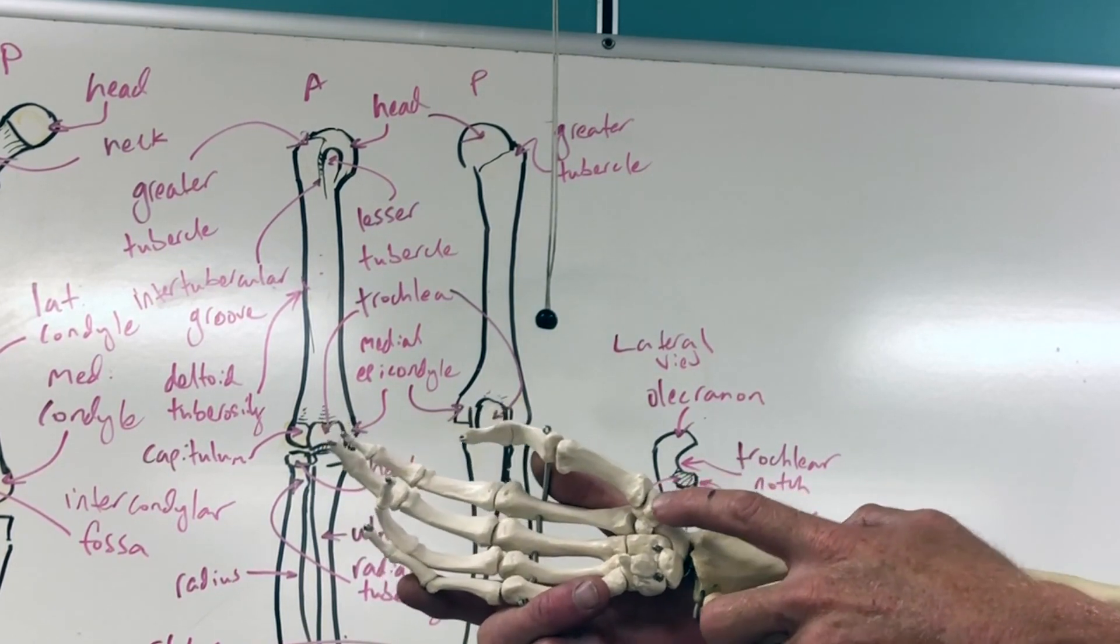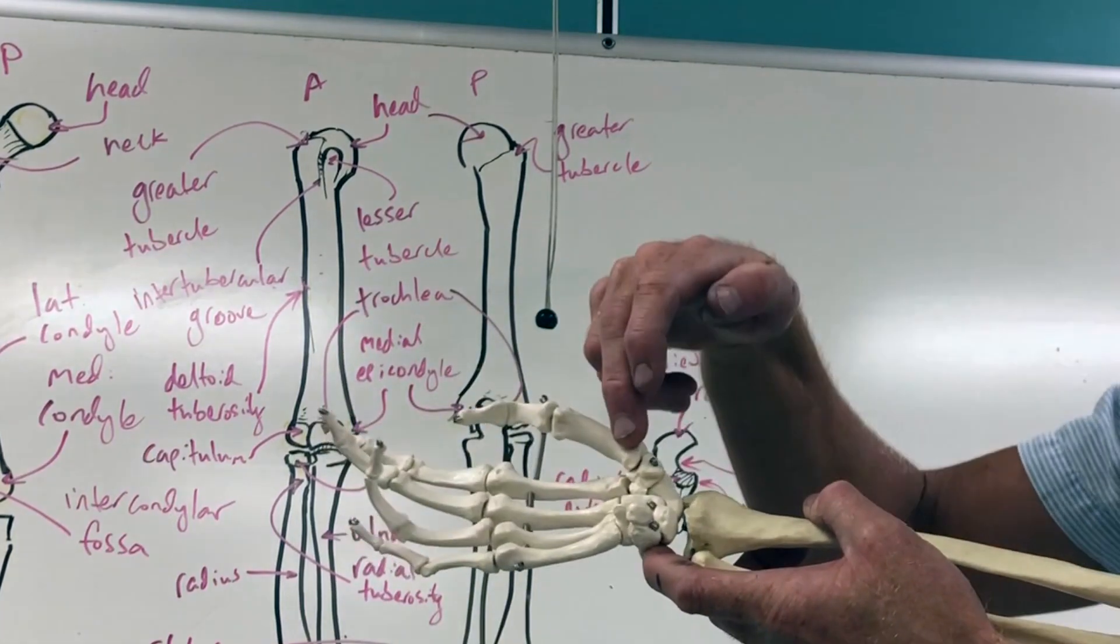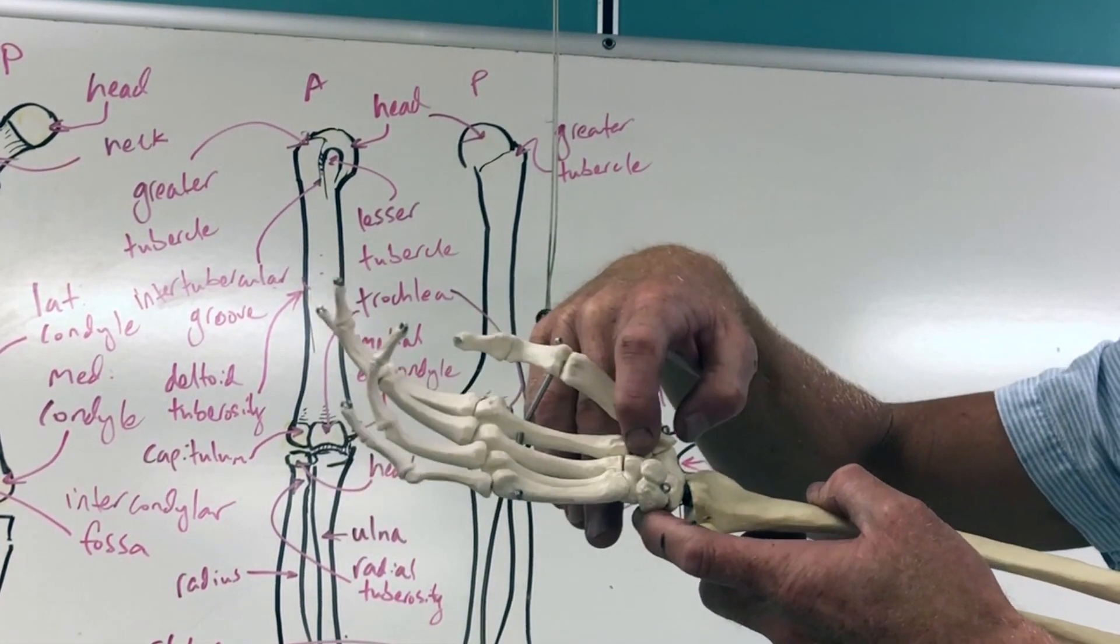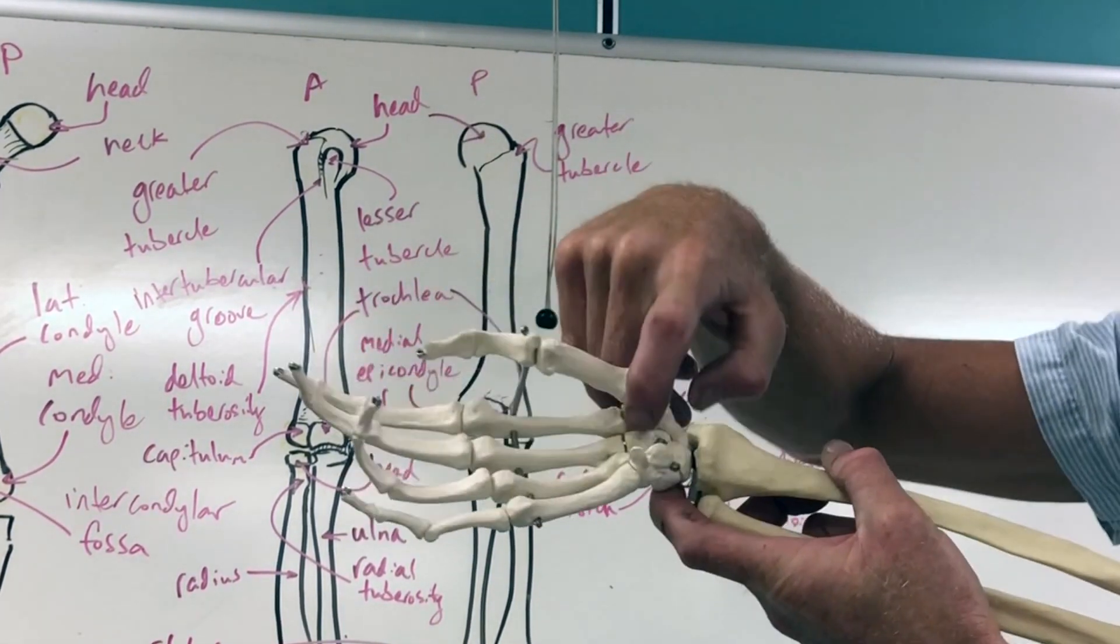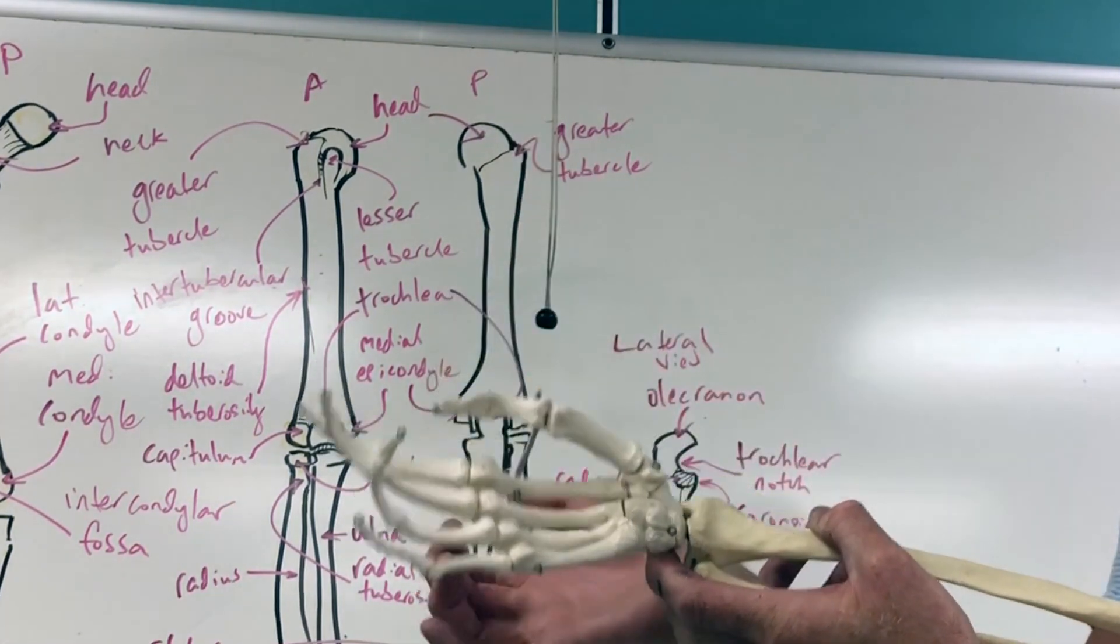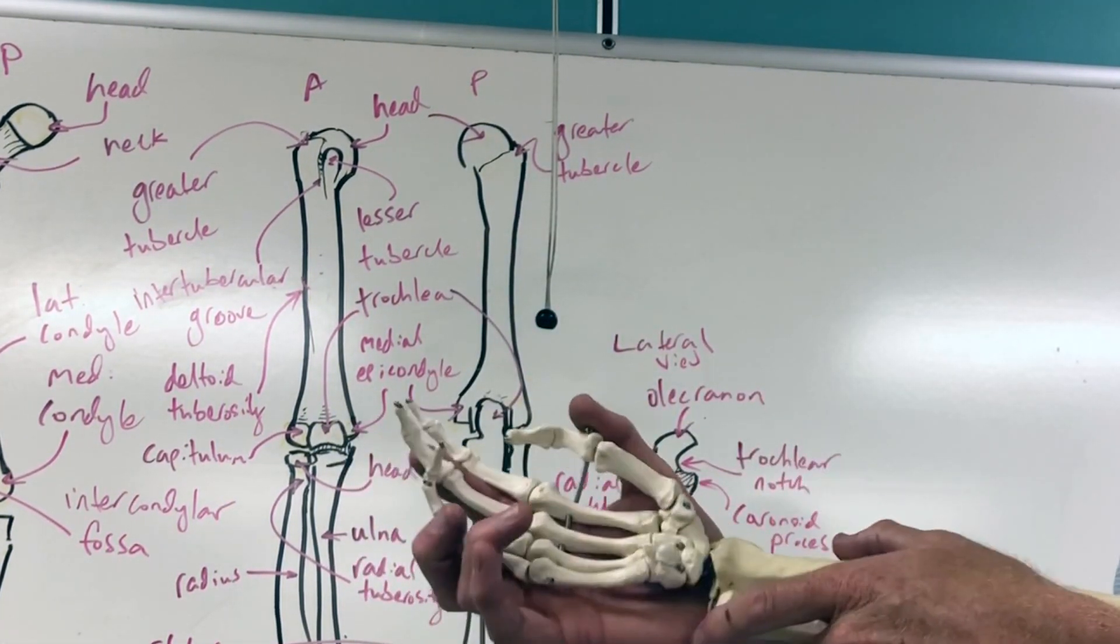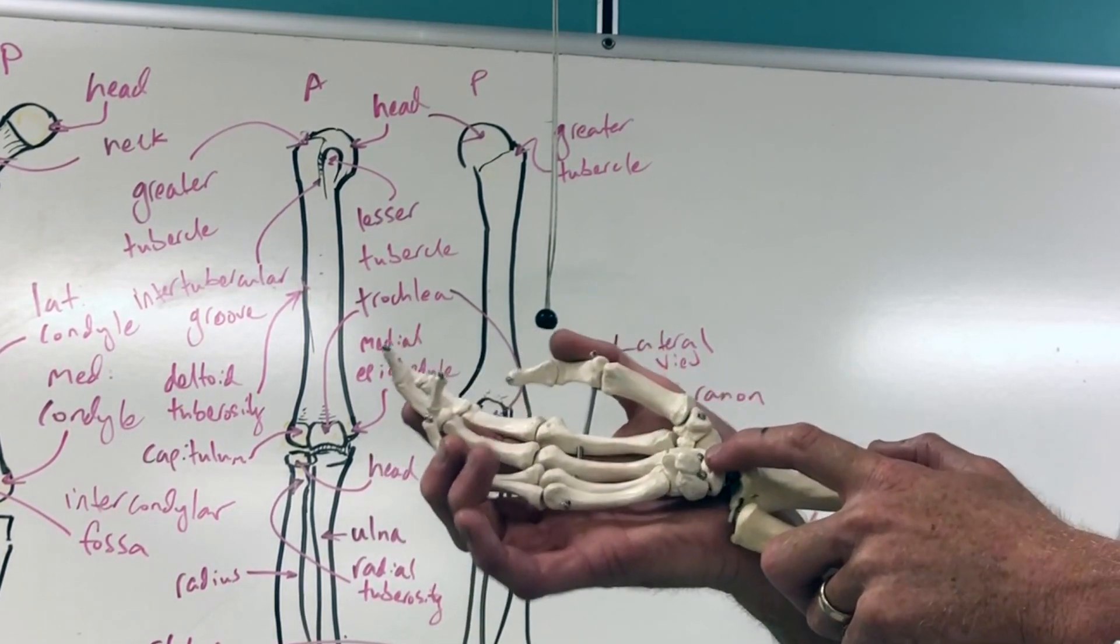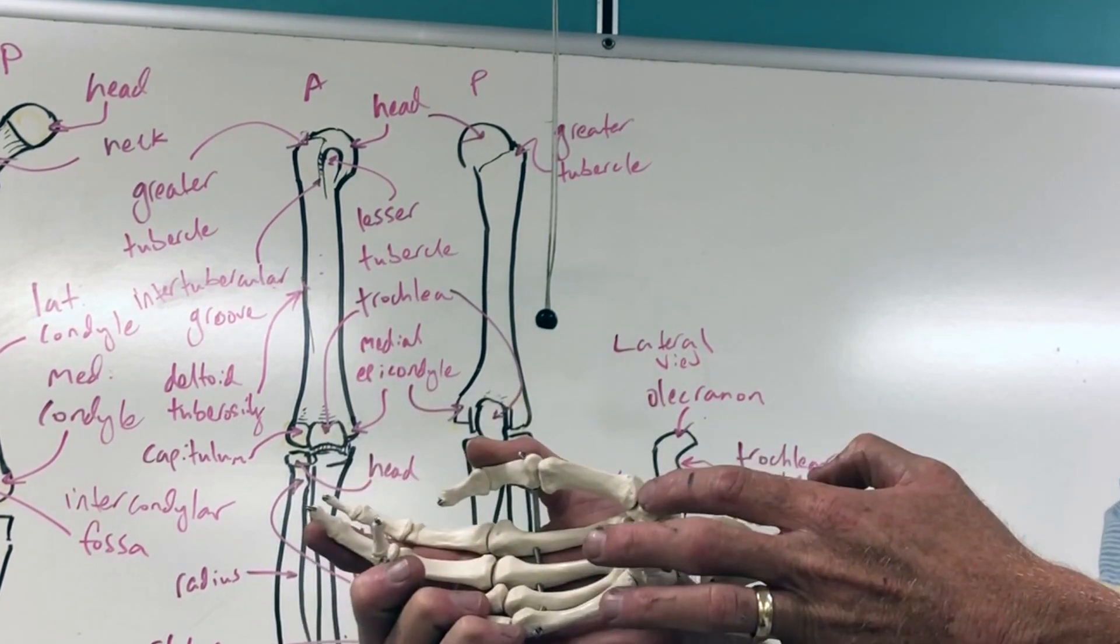If we go back over here to the scaphoid, the next one we're going to talk about is called the trapezium. Then if we go more medial it goes trapezium, trapezoid, capitate is this large bone right there, and then hamate is finally the bone that connects to the fifth metacarpal. So in sequence, the first four are scaphoid, lunate, triquetrum, pisiform. The second four: trapezium, trapezoid, capitate, hamate.